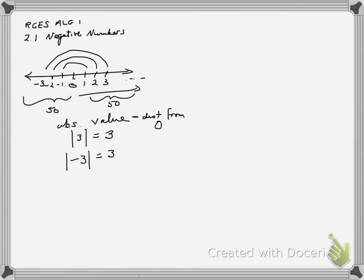Now a couple more ideas. When you add, since you've been young, you've been adding two positive numbers. If I have 2, I go over to 2 here, and if I want to add 3 more, I would go to the right 3 more places — 1, 2, 3 — until I get to 5.